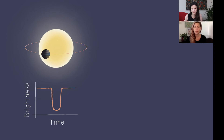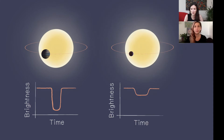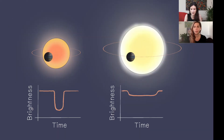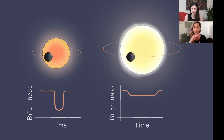If you imagine a planet of a particular size creating a dip, a smaller planet orbiting around the same size star will produce a smaller dip because the fraction of light being blocked is smaller. Conversely, if we have the same sized planet but a smaller star, the dip will be larger because it's a larger fraction of the star's light being blocked. These are the dips that people mark on Planet Hunters TESS.